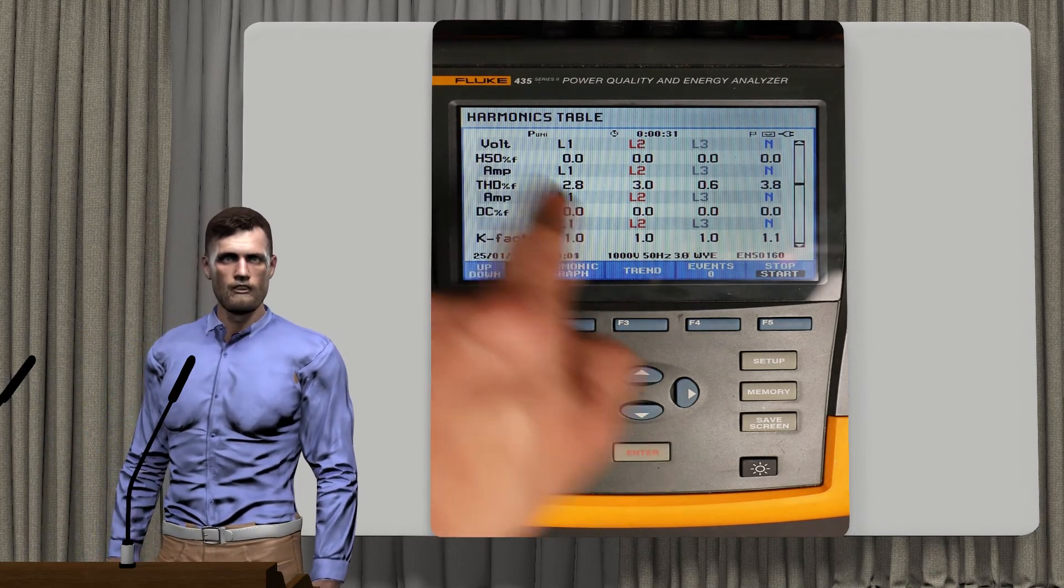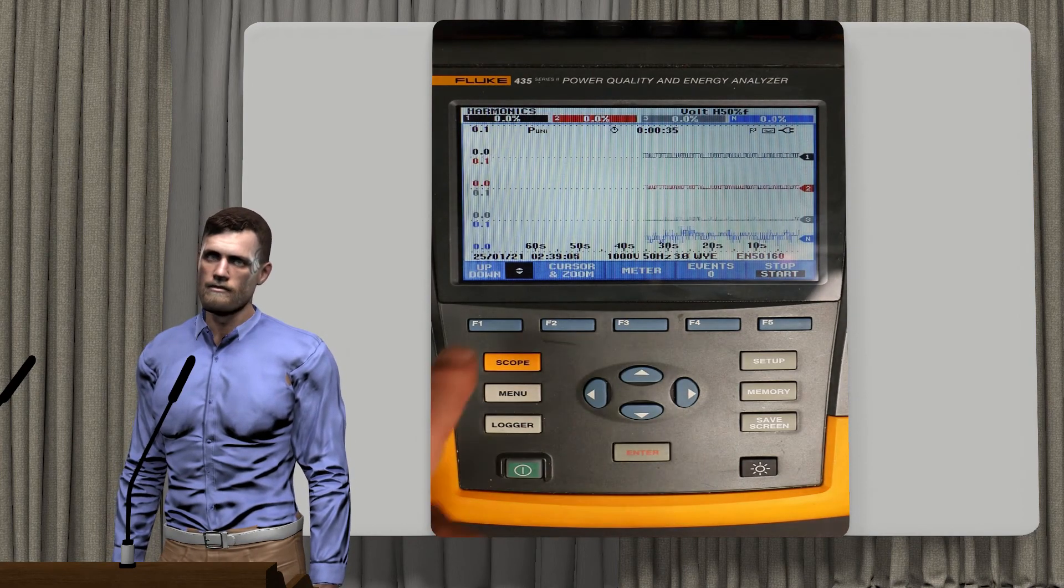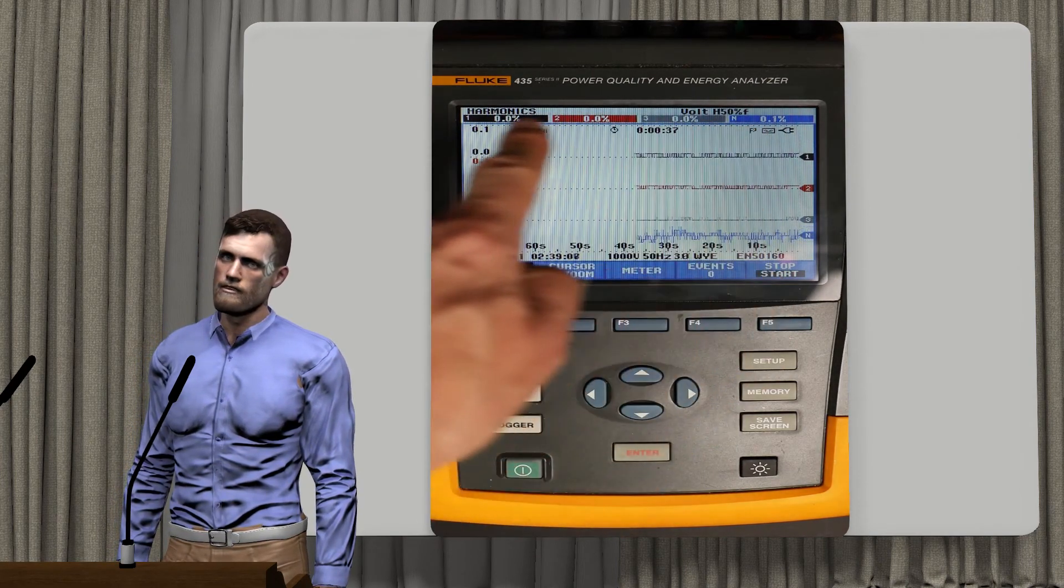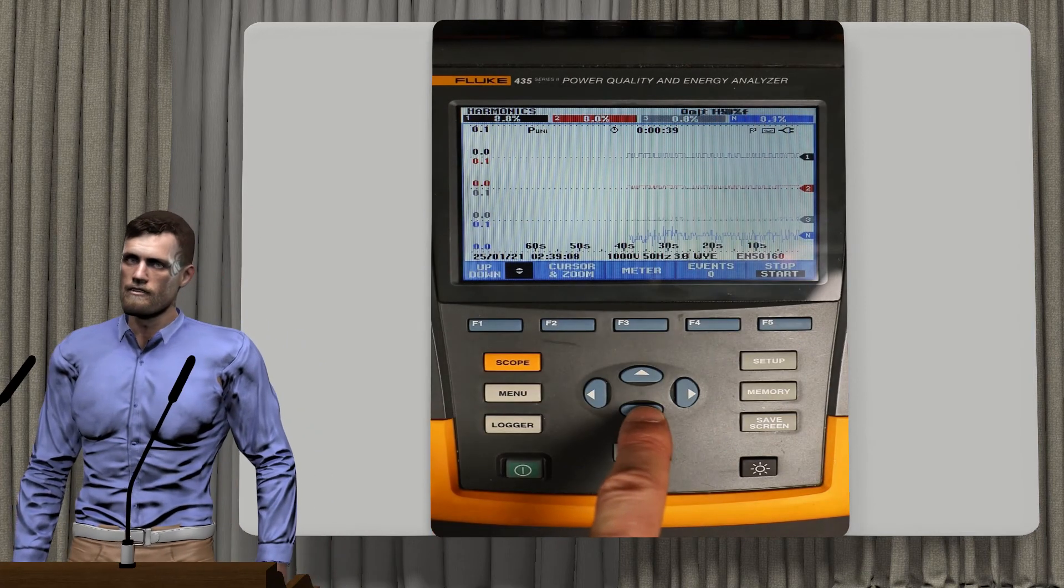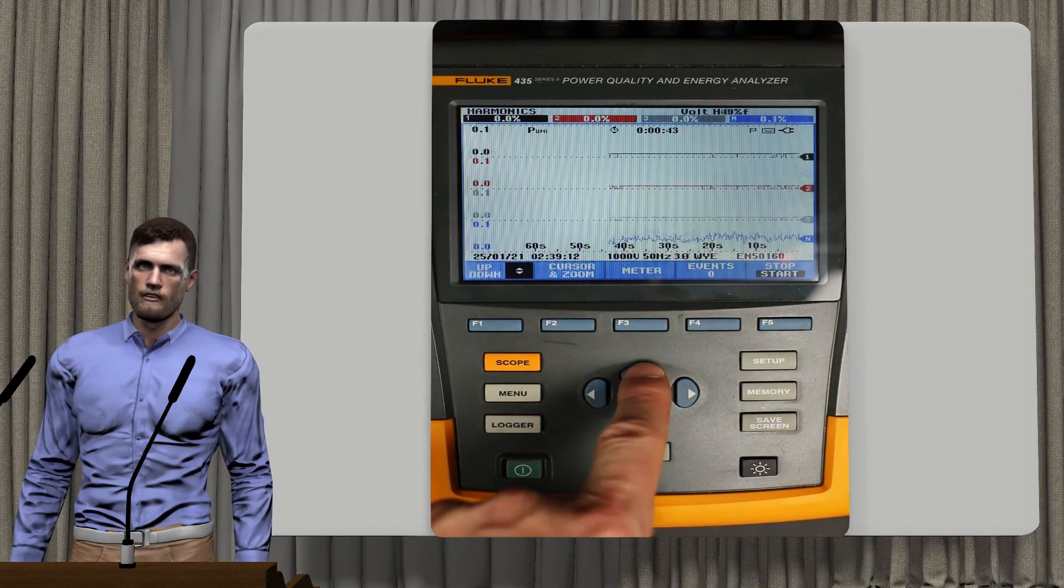Now in F3 the trend option appears, which allows you to view the data in the form of trend graphs. At the top, the current values appear together with the parameter that is displayed, and again with the up and down arrows we can see all the parameters graphically.